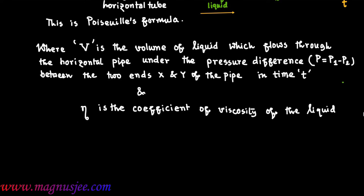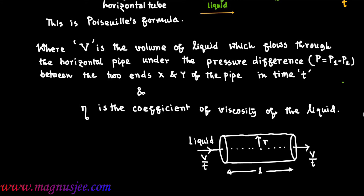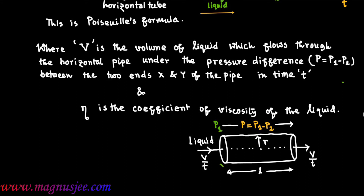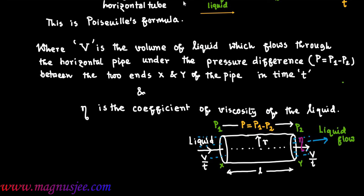Eta is the coefficient of viscosity of the liquid flowing through the tube. Now we can draw the diagram again. This is the horizontal tube of length L. The axis of the tube or pipe, with liquid flowing towards the right from the left end to the right end. V by T is the rate of flow, L is the length, and R is the radius of the pipe. P equals P1 minus P2 is the pressure difference acting towards the right. As P1 is greater than P2, liquid flows from end x to y towards the right.